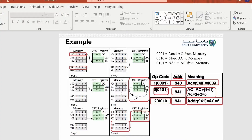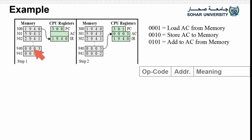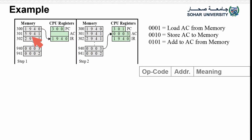Looking at the diagram here, you can see these numbers — these are the addresses. Each address is like a container. The memory has containers, and each container has an address.